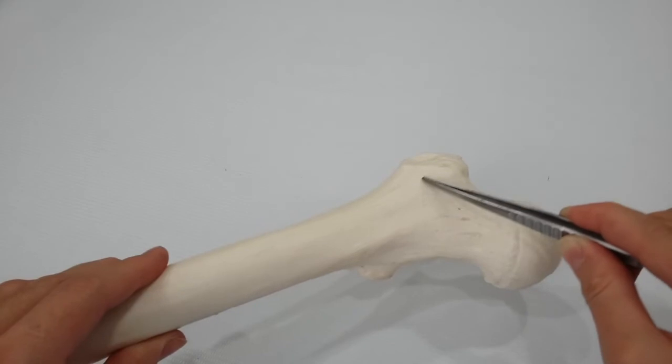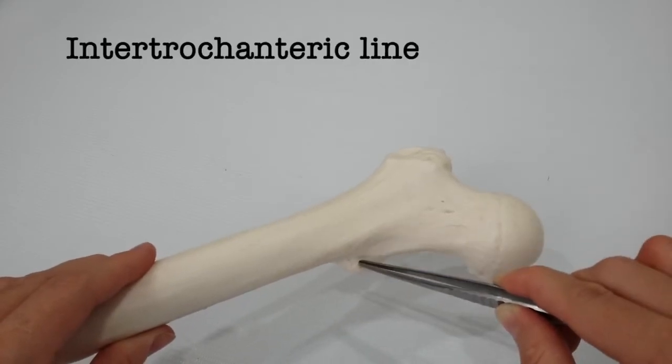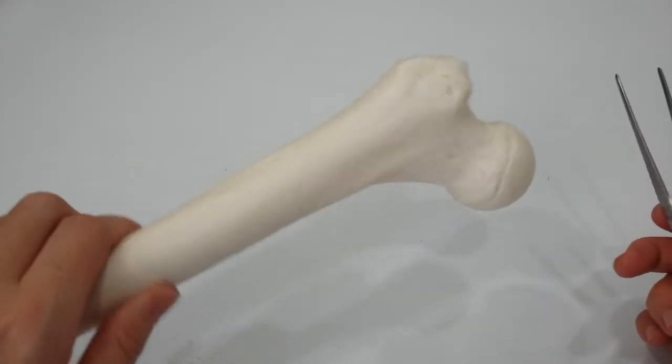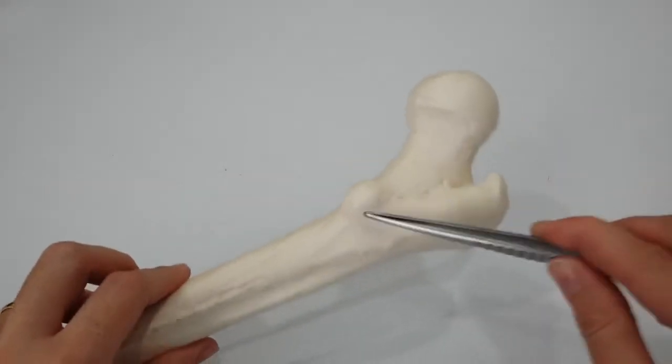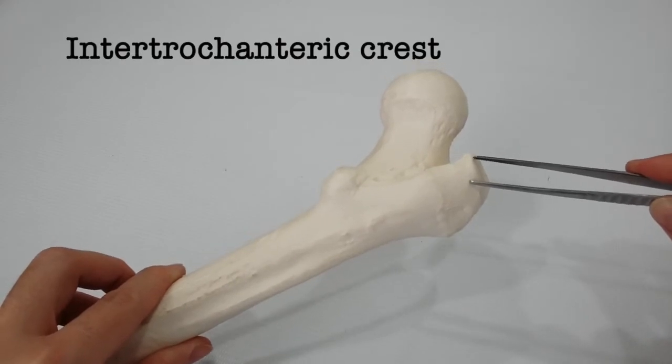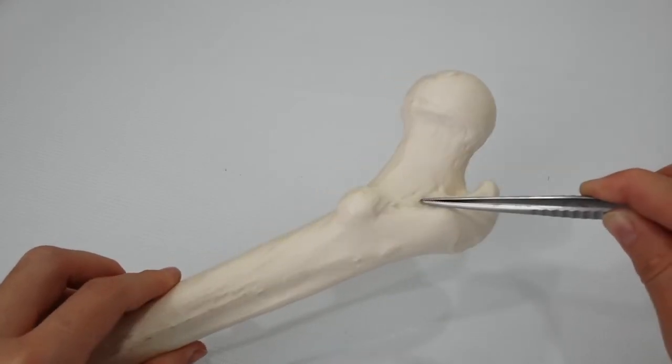Connecting the two trochanters are the intertrochanteric line anteriorly, where the iliofemoral ligament is attached, and a prominent intertrochanteric crest posteriorly, on which is the quadrate tubercle.